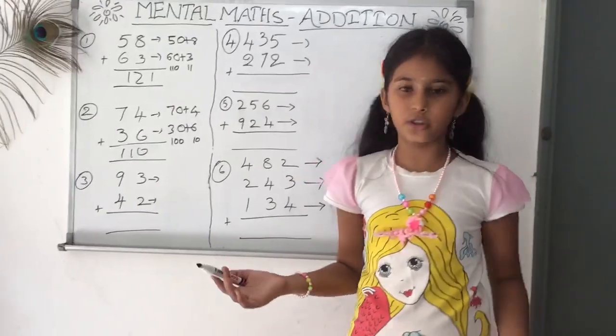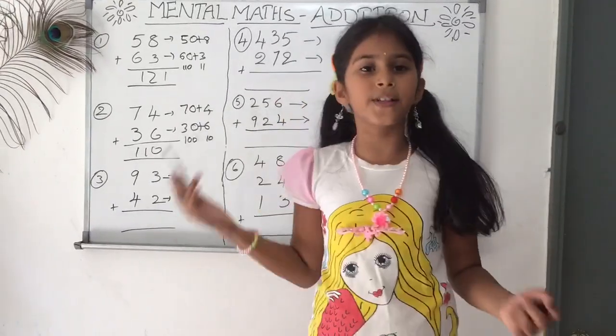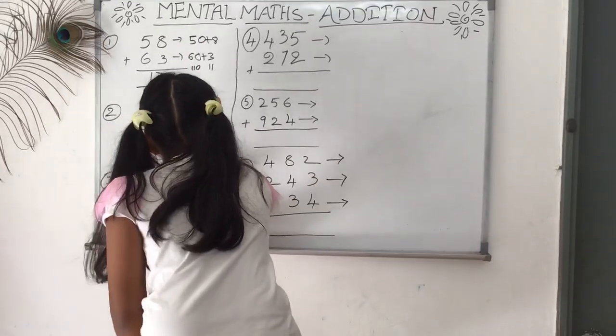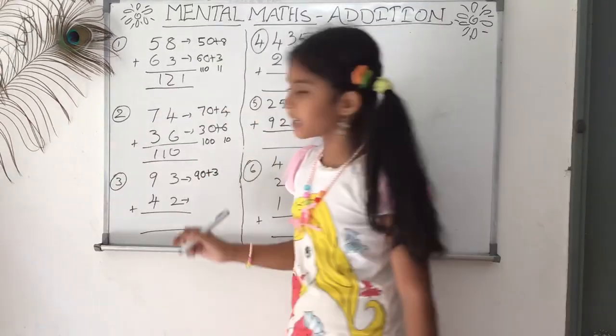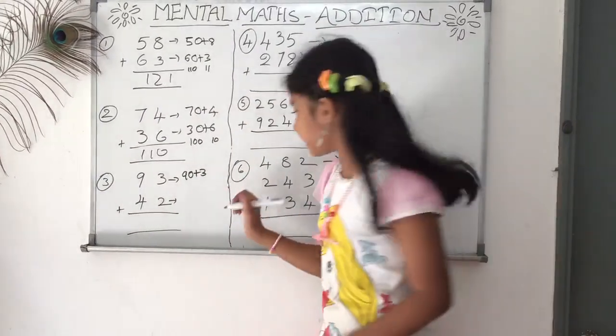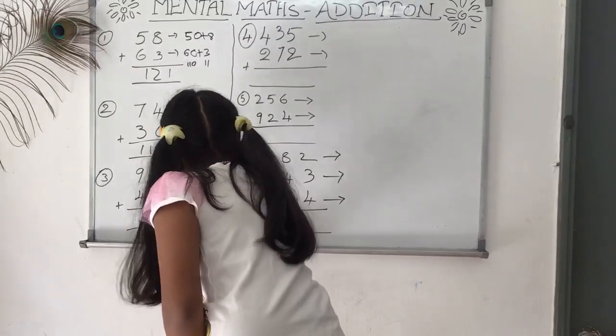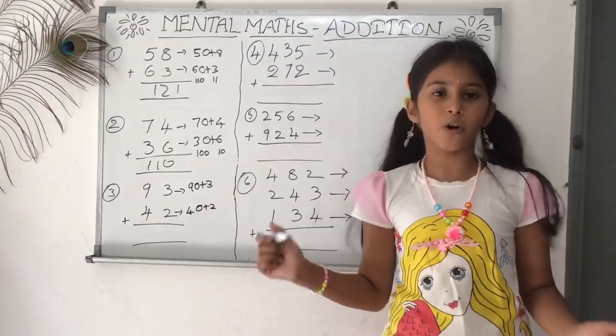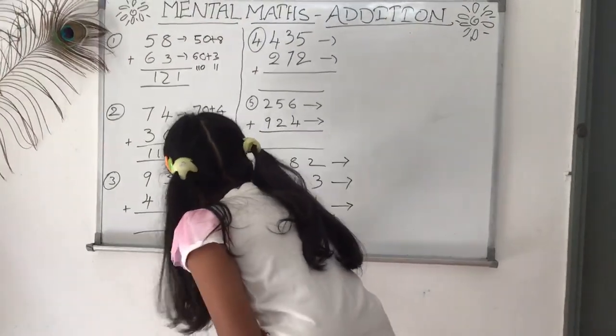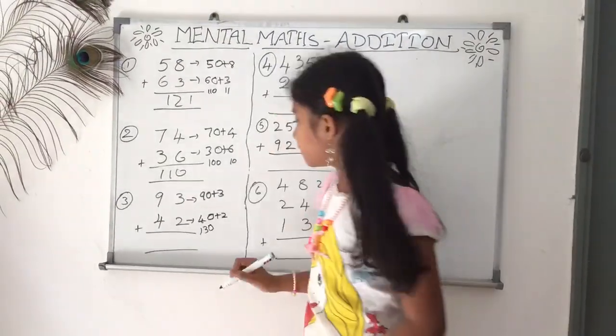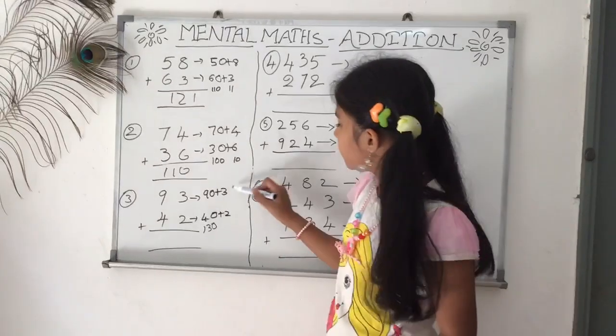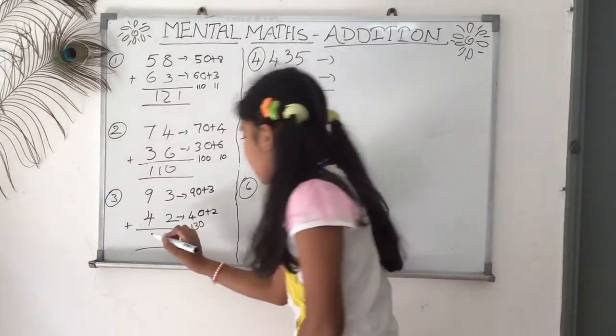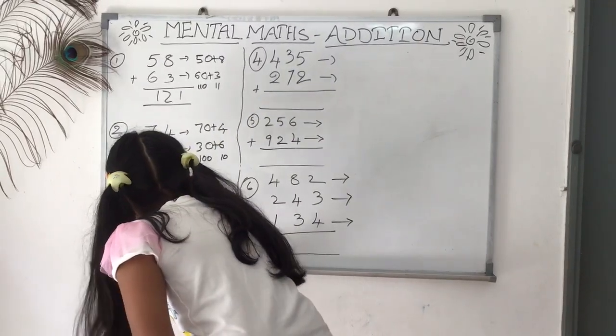Now let's go to the third question. This is also the same. 93 is nothing but 90 plus 3. Similarly, 42 is nothing but 40 plus 2. Now we need to add 90 plus 40, we get 130. Now we need to add 3 plus 2, which is 5. So 130 plus 5, the answer is 135.